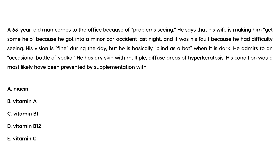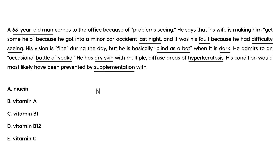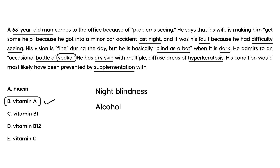For the first vignette: a 63-year-old man comes to the office with difficulty seeing. His wife made him come in after he got into a minor car accident at night — his vision is fine during the day but he's basically blind in the dark. He admits to an occasional bottle of vodka, and has dry skin with multiple diffuse areas of hyperkeratosis. He has night blindness, and the vodka suggests alcoholism causing an absorption problem — so the answer is vitamin A.